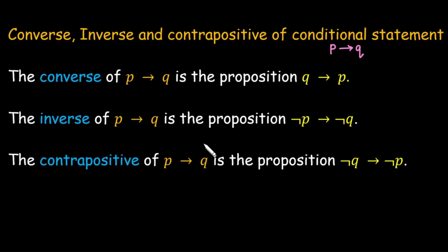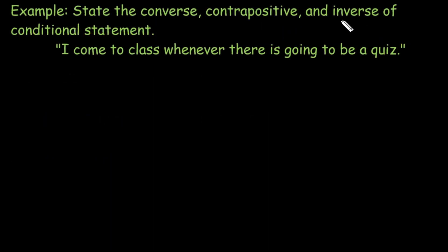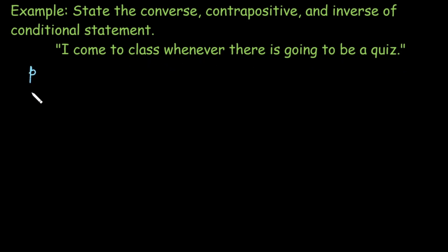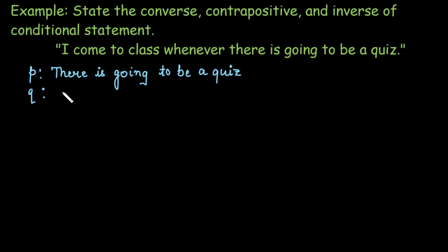Let's understand with the help of an example. State the converse, contrapositive, and inverse of the conditional statement: 'I come to class whenever there is going to be a quiz.' First, we need to identify what is the hypothesis and what is the conclusion. The condition is: there is going to be a quiz. And the conclusion is: I come to the class. So, P is the hypothesis — there is going to be a quiz — and Q is: I come to the class.